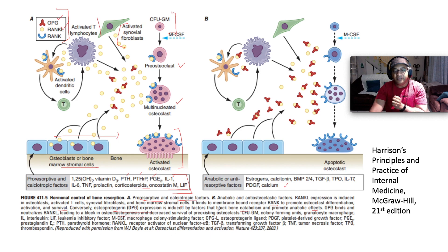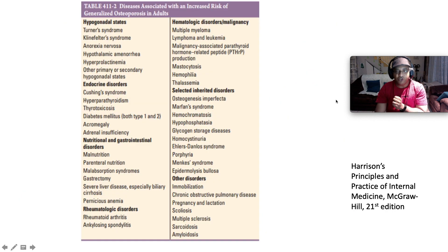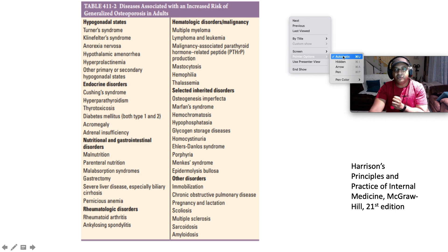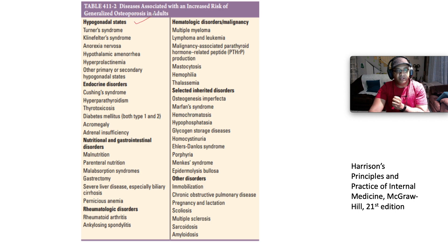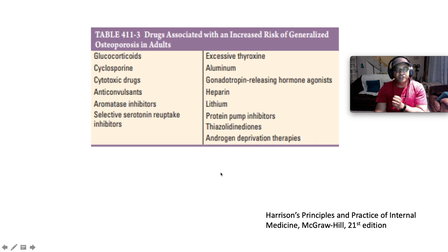There are many diseases associated with increased risk of generalized osteoporosis, divided into hypogonadal states, endocrine disorders, nutritional and GI disorders, rheumatological disorders, hematological disorders, malignancy, selected inherited disorders, and other disorders — a whole lot to mention.